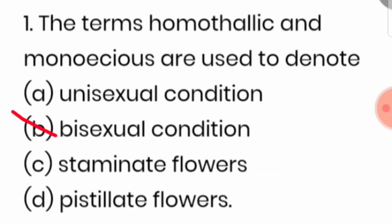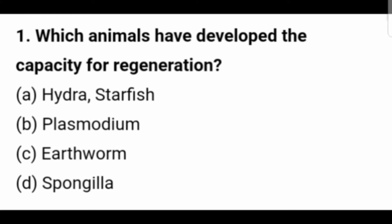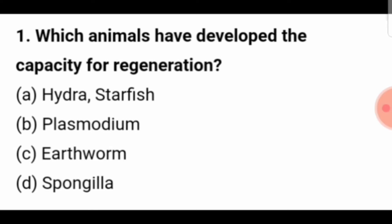If any organism is bisexual, meaning it has both male and female reproductive structures in the same individual, that can be denoted as monoaceous or homothalic. Next question: which animals have developed the capacity for regeneration? The correct answer is hydra and starfish.